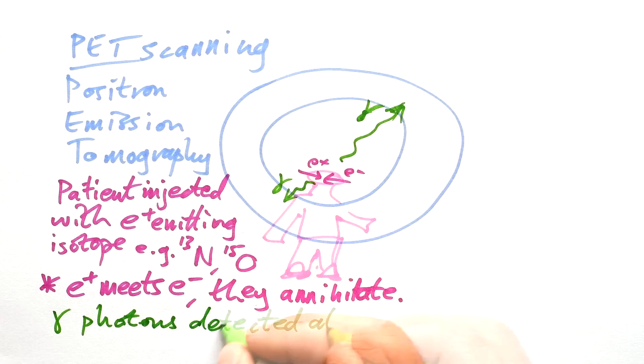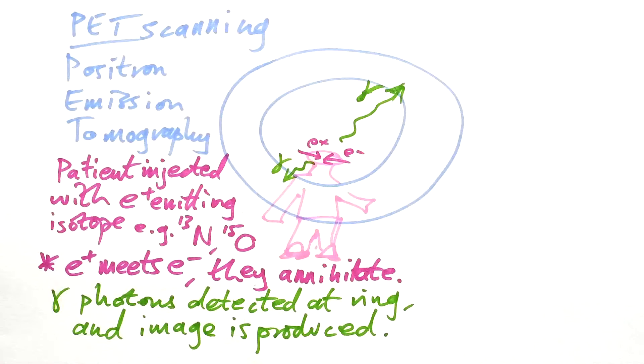These photons are detected at the ring and then you can produce an image from these. Now, this is good building up an image, a 3D image of what's going on inside your body. But it does use gamma radiation as gamma photons that are produced by the annihilation. And so it's not considered as safe as MRI. It's still really expensive.